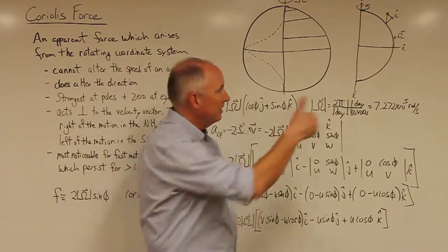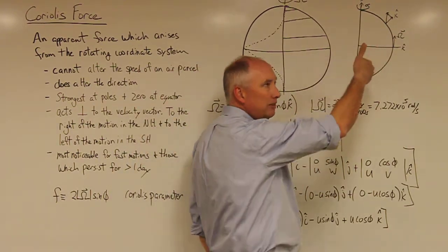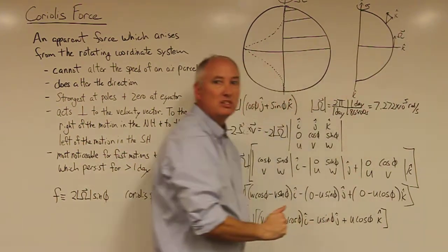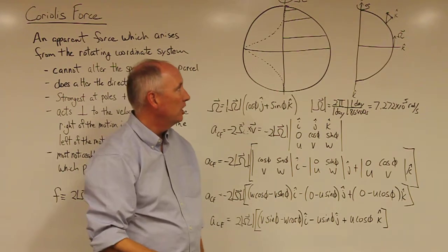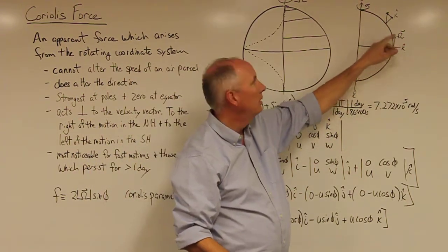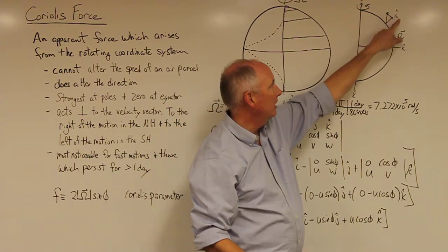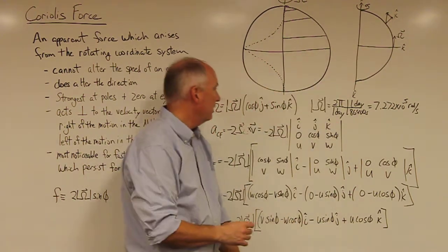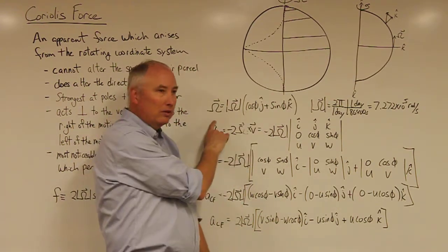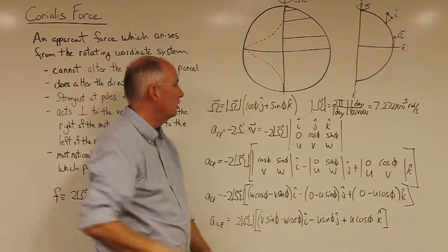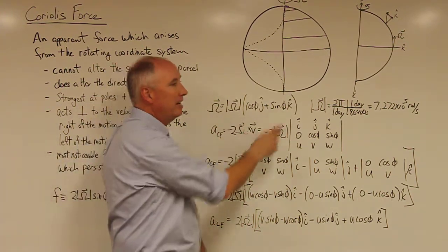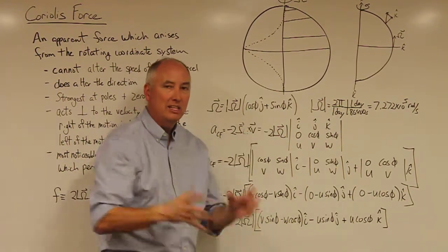Because that rotation vector always points in that same direction, and when you're at the equator, that happens to coincide with the positive j-direction. And everywhere in between, it's some combination of in the k-hat direction and the j-hat direction. And the mathematical formulation which can describe that is given here, where the angular velocity is equal to the magnitude of that times cosine of φ in the j-hat direction plus sine of φ in the k-hat direction. And φ in this case is latitude.